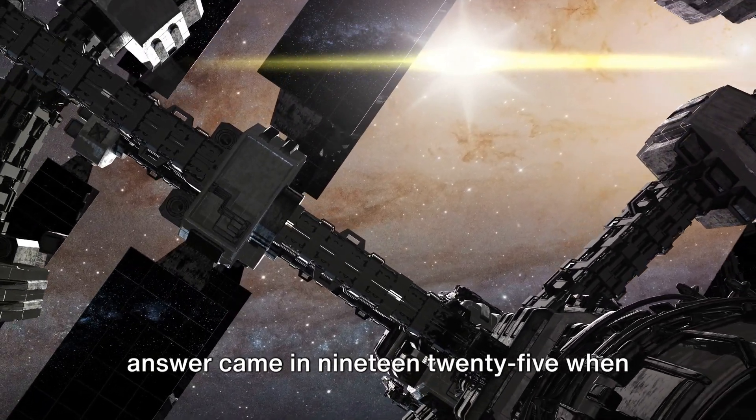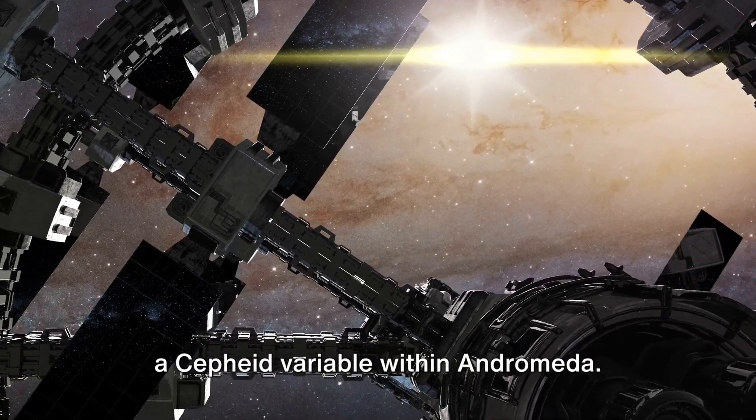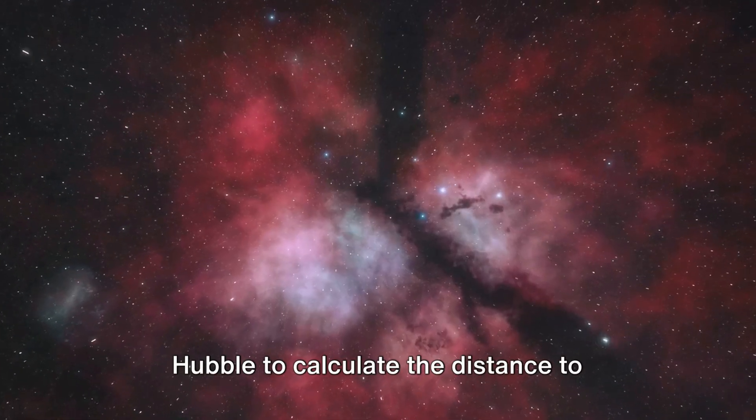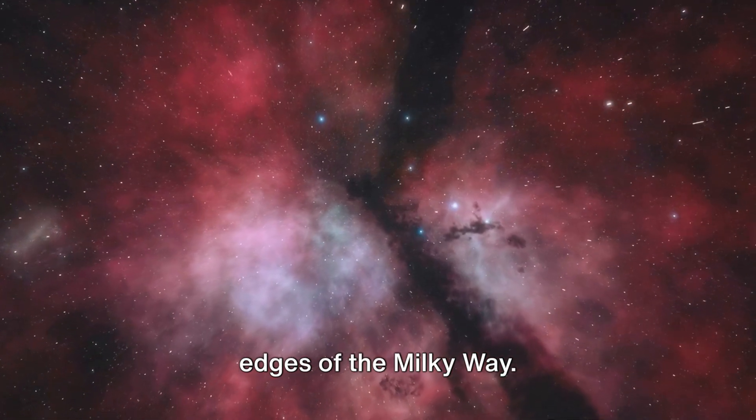The answer came in 1925 when Hubble discovered a type of star known as a Cepheid variable within Andromeda. The brightness of these stars allowed Hubble to calculate the distance to Andromeda, proving it was far beyond the edges of the Milky Way.